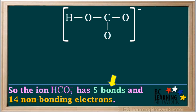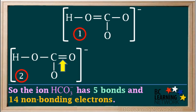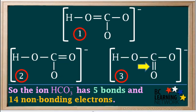Next we need to explore different ways of adding five bonds to this ion. We start by adding a bond between each pair of atoms, which takes care of four bonds out of a total possible five. In structure one, we'll place a double bond between the O atom on the left and the carbon atom. In structure two, we'll place the double bond between the carbon atom and the oxygen atom on the right side. And in structure three, we'll place the double bond between the carbon and the oxygen atom on the bottom. You can check to see that all three of these structures have five bonds each.